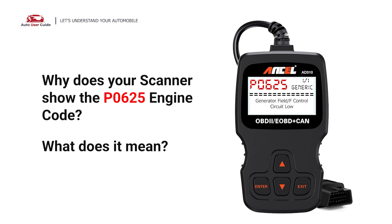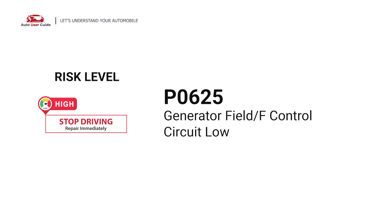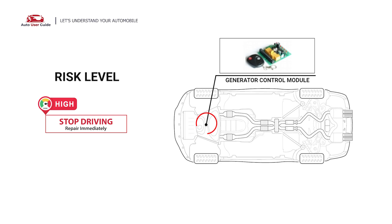Why does your scanner show the P0625 engine code? What does it mean? P0625 is a diagnostic trouble code for generator field or F-terminal circuit low. It indicates that the PCM has detected a malfunction with the generator field coil control circuit. Under this circumstance, stop driving and repair your vehicle immediately.